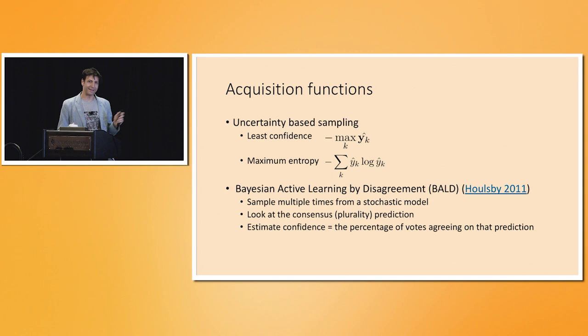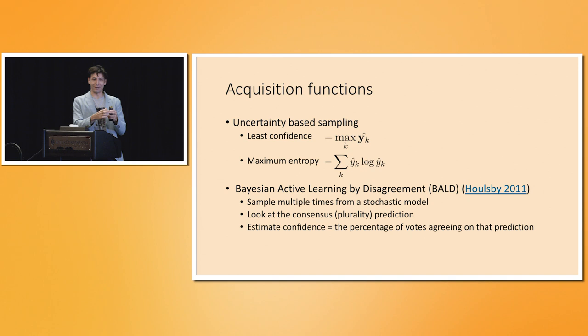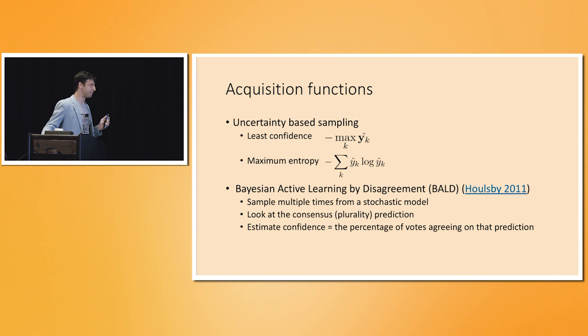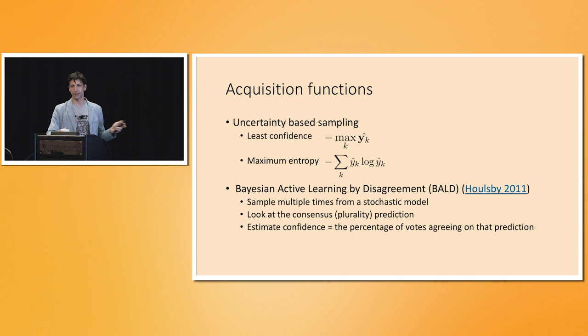There are some problems with uncertainty sampling. For example, there might be intrinsic irreducible noise in some region of input space — no matter how many examples you sample there, the label is essentially a coin toss. The classifier will rightly learn to output a near-uniform distribution there, and you could wind up spending your entire sampling budget in that uninformative region. If you believe there exists some deterministic labeling function, that wipes this possibility off.